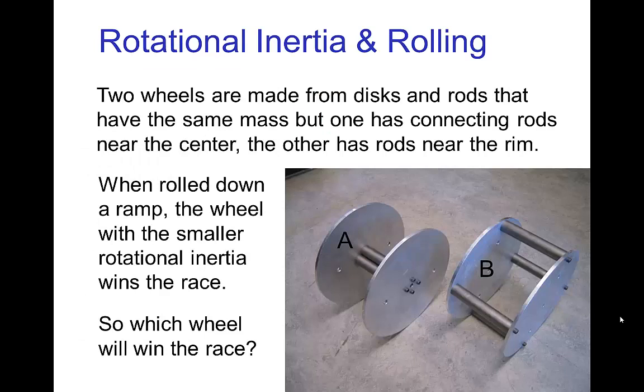Let's look at another example here. I have a pair of wheels and the wheels are similar except that one wheel has four metal rods connecting the discs near the center. And then the other wheel has similar metal rods, but they are located around the rim. If I roll these down a ramp, the wheel with the smaller rotational inertia is going to win the race. Which do you think is going to win? Or is it going to be a tie? Go ahead and place your bets.